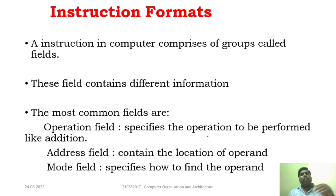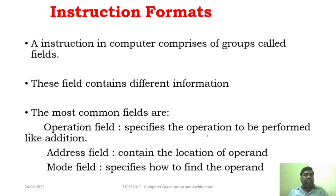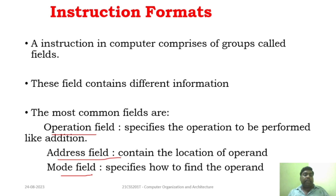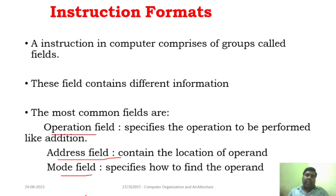Before going to see various types of instruction formats, understand what an instruction is. An instruction format has a specified format for each and every instruction. There are common fields for an instruction: you have an operation field, an address field, and a mode field. The operation field specifies the operation — whether it is addition, multiplication, division — which operation it has to perform. The address field contains the location of the operand — where that particular operand is located. The mode field specifies how to find the operand. These are the three fields common for instruction formats.